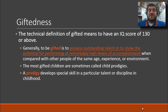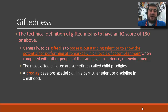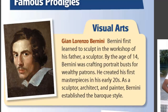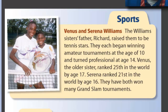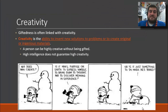Giftedness is the other end of the spectrum, meaning an IQ score of 130 or above. The definition of gifted is to possess outstanding talent or to show the potential for performing at a remarkably high level of accomplishment compared to other people of the same age. Gifted children identified as such are sometimes called prodigies, who can develop a particular talent in childhood. Examples include Bernini in visual arts, Mozart in music — who gave his first composition at age five — the Williams sisters in tennis, and Ruth Lawrence, who earned multiple math degrees before age 18.